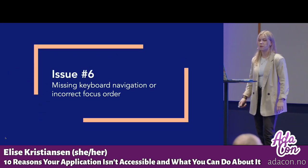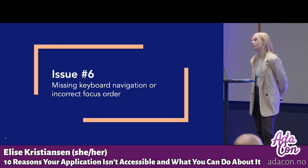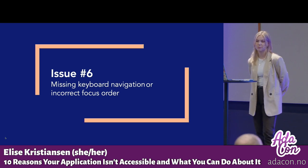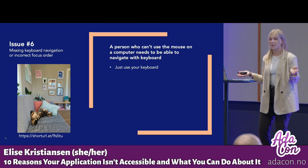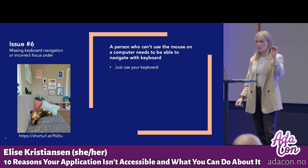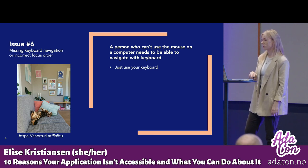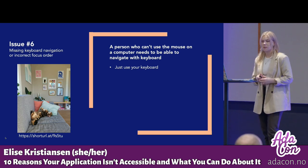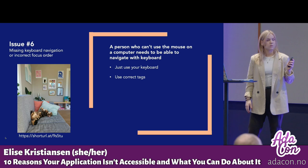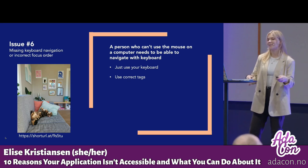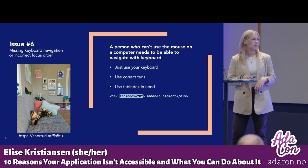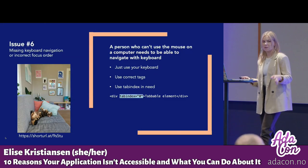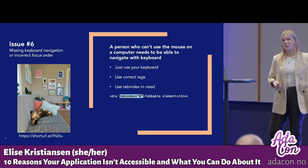Issue number six: missing keyboard navigation or incorrect focus order, hindering people who rely on a keyboard to navigate. The quickest and easiest way to check is to use your own keyboard — tab through everything and make sure all elements are logically ordered and accessible. A common mistake is making clickable elements only reachable and clickable by mouse. Use the right HTML tags, as they already take care of a lot of tab navigation issues. Use tab index only if needed, but with the right HTML tags you generally shouldn't need it.